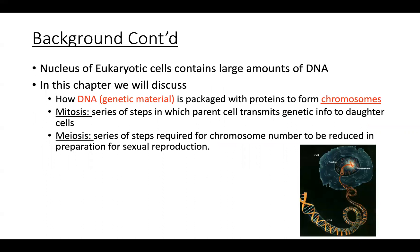Inside the nucleus of a eukaryotic cell, there's going to be a large amount of DNA — that's where our DNA is housed. In this chapter, we're going to take a look at how DNA, which is our genetic material, is packaged into chromosomes, and then how those chromosomes undergo a series of steps in which the parent cell transmits genetic information to the daughter cell through a process known as mitosis. And then how there's a reductive cell division that prepares our gametes for sexual reproduction — that process is known as meiosis.